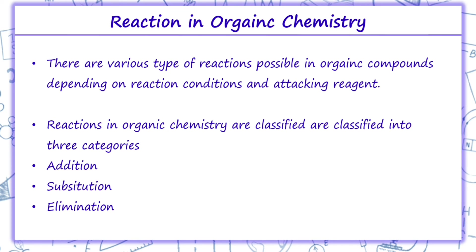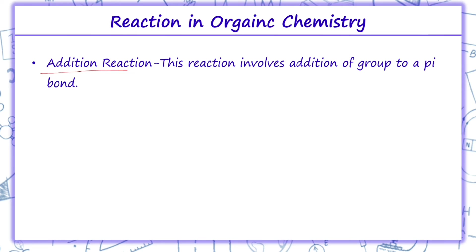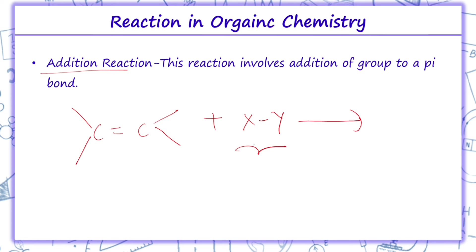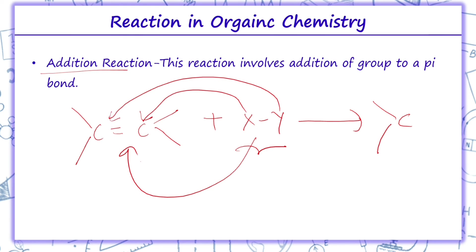Coming on to reactions in organic chemistry: depending on the reaction conditions and attacking reagent, there are three types of reactions — addition, substitution, and elimination. Addition reaction basically involves the addition of a group to a pi bond. We have a compound with a pi-bonded double bond; a nucleophile attaches to it, so X goes to one carbon and Y goes to the next carbon. These nucleophiles are added to the carbons linked by the pi bond.